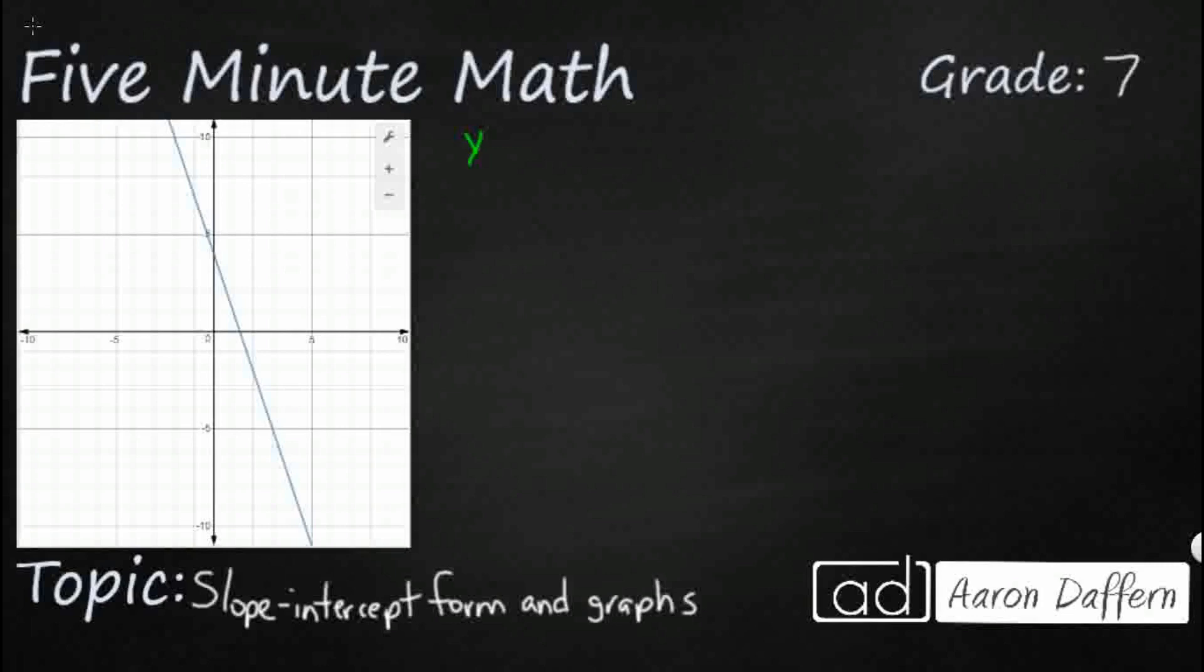So the dreaded slope-intercept form that we learn so much about in 7th grade, y equals mx plus b. Now this is just one form of a linear equation, but it's very popular because it has several things that we need to make sure we understand. First, y is by itself. It's always nice to have one variable off on one side of the equal sign and everything else crowded on the other side because it makes things a little bit cleaner.